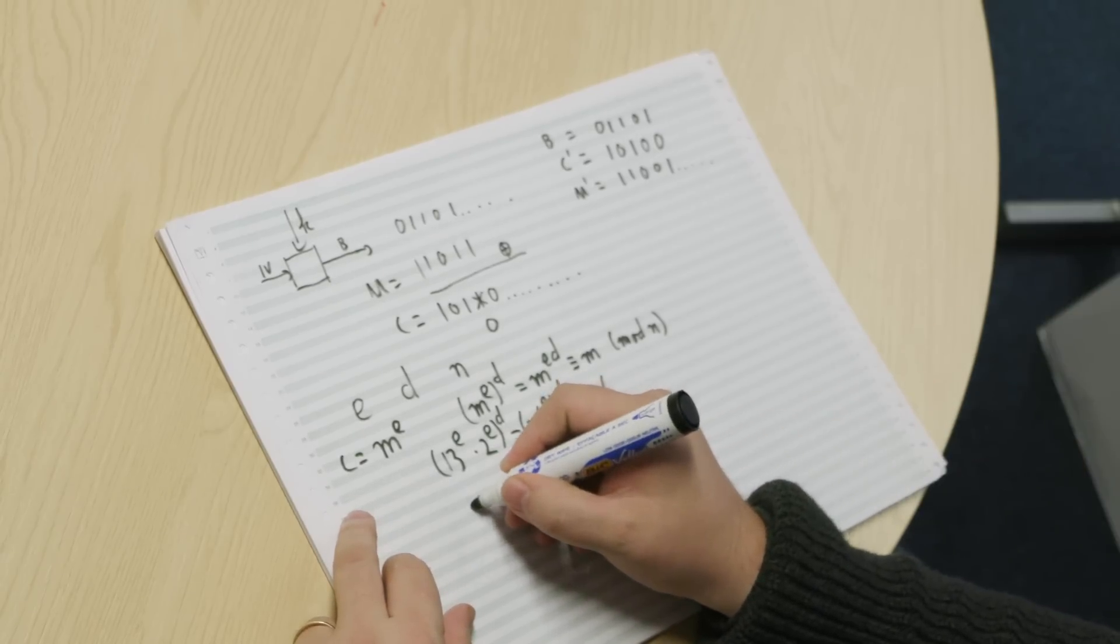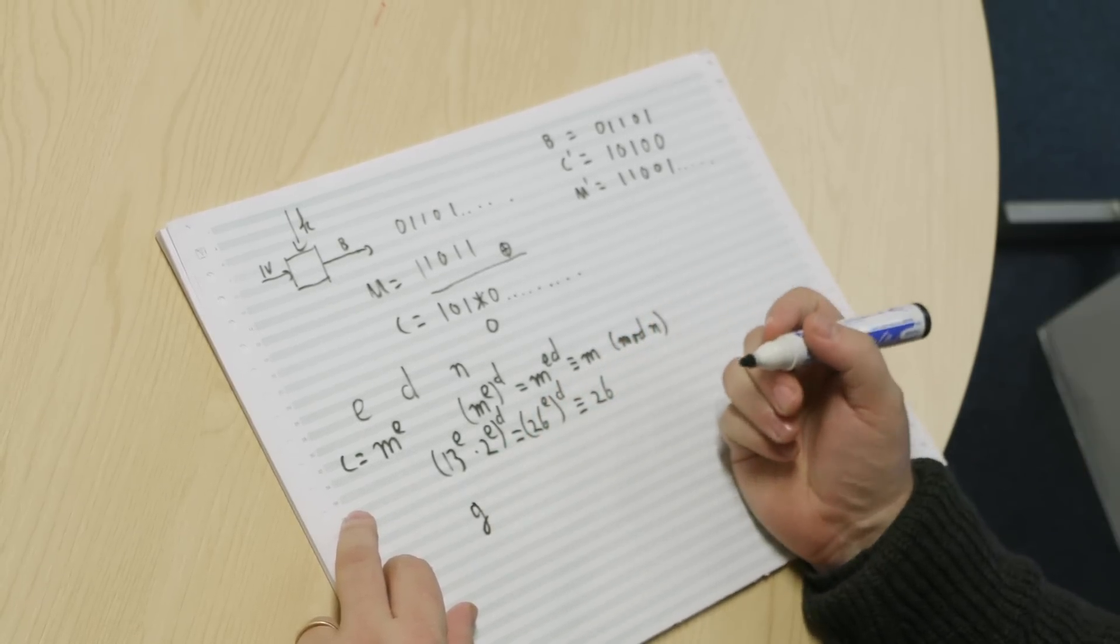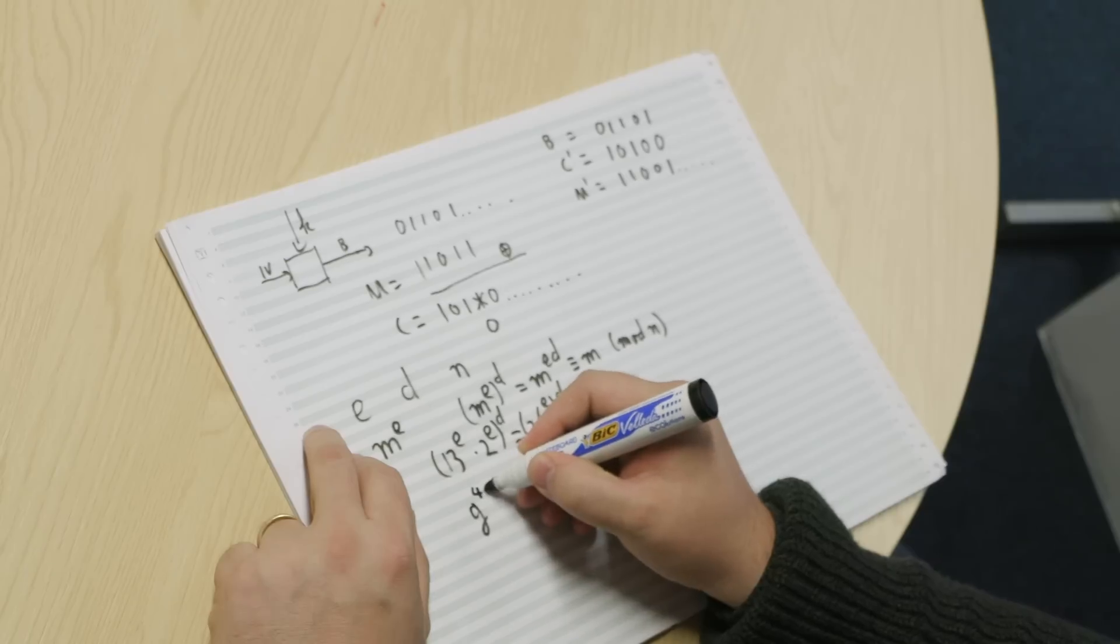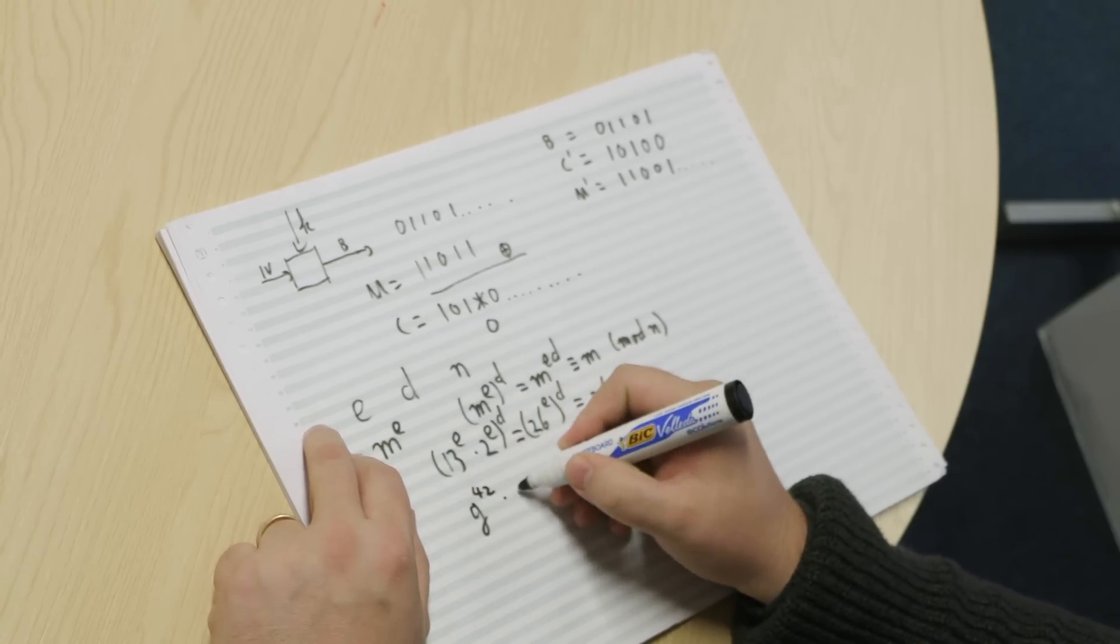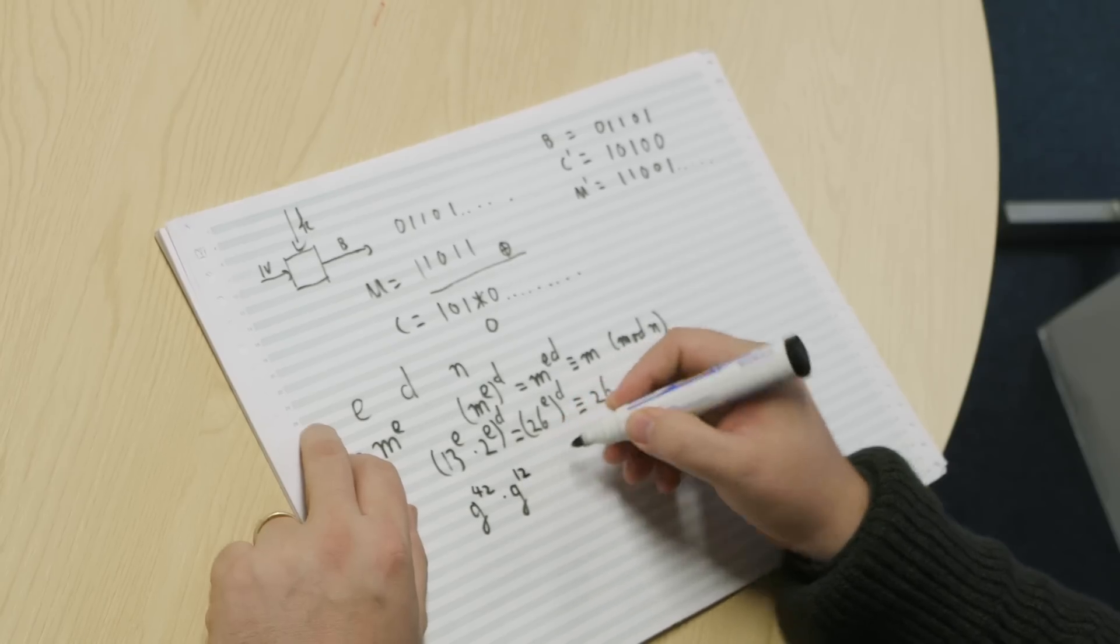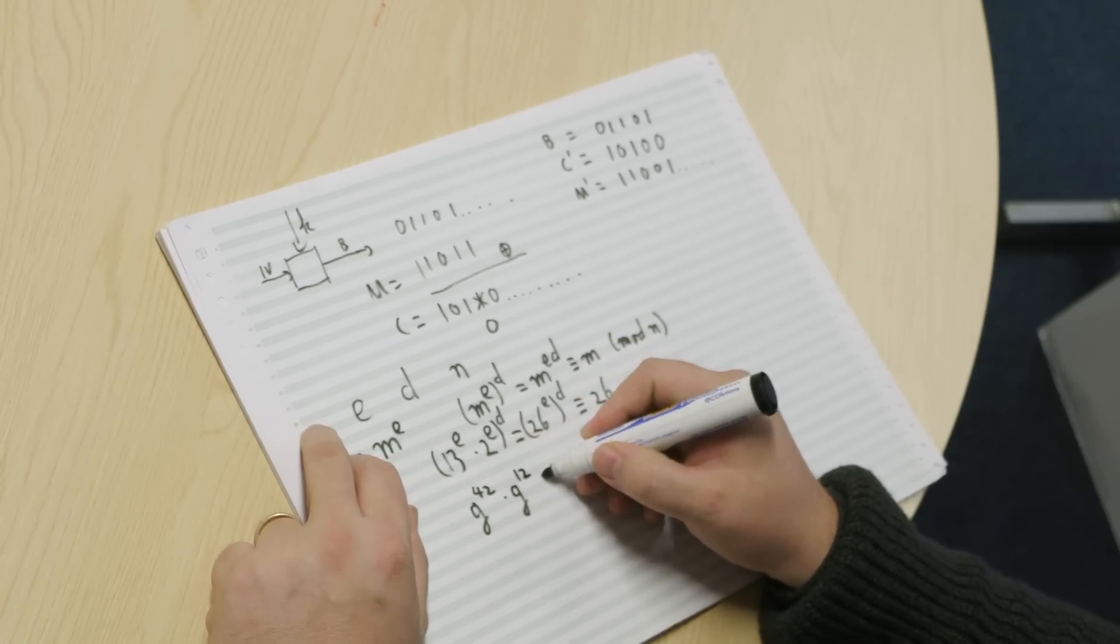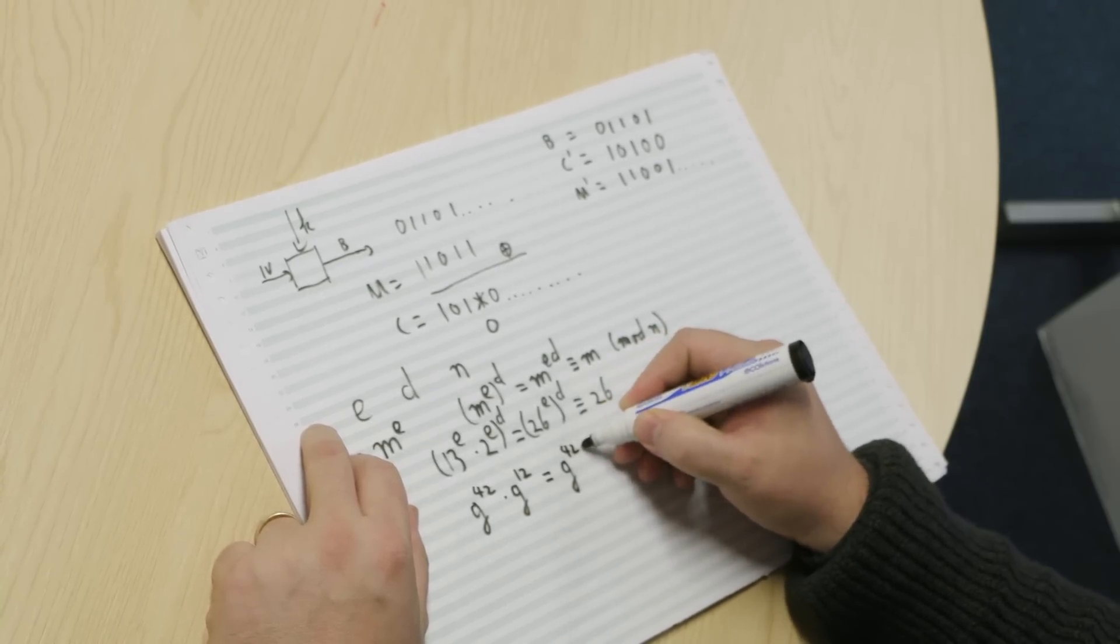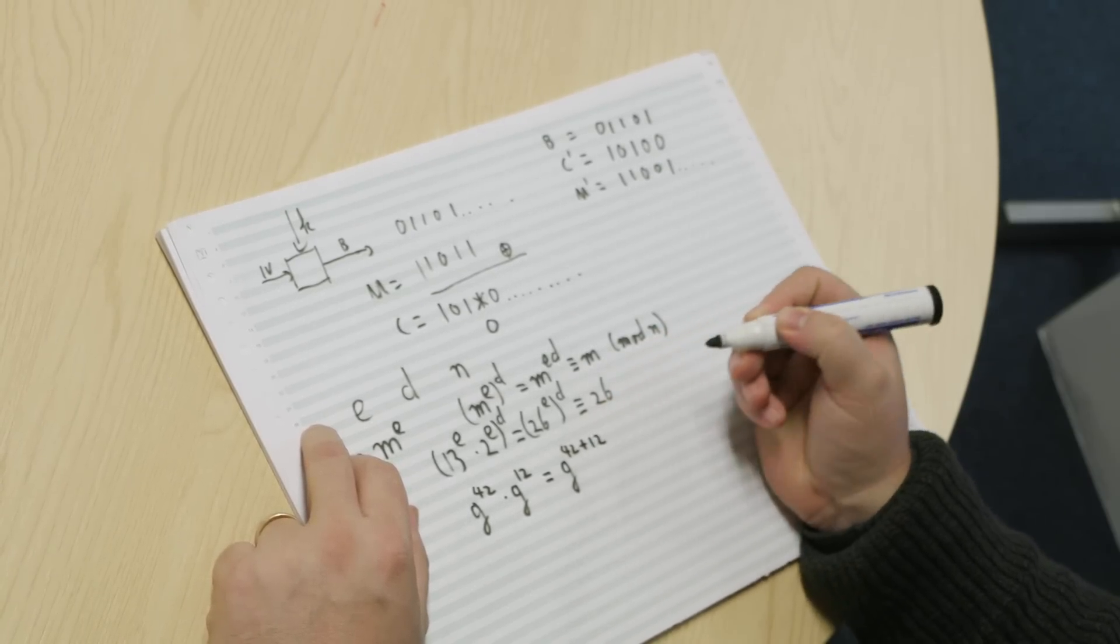Now, I would like to convince you that multiplication and addition are actually kind of the same. So if I have a ciphertext, some random number, let's call it G, and I raise it to a power of a chosen number. Give me a number. 42. And I multiply that with G to the power of yet another number. 12. If I multiply these two numbers together, what I get is G to the power of 42 plus 12. 54.